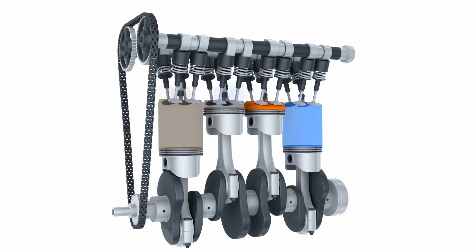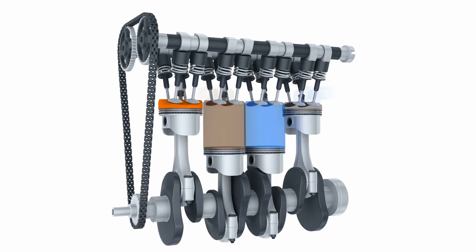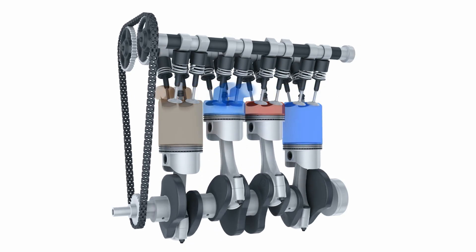To smooth things out, engines have multiple cylinders – usually four, six, or eight – arranged so that their power strokes occur at different times.